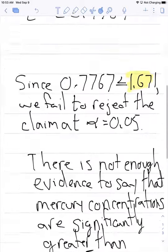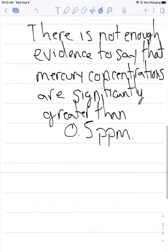But the key here is that we're looking at the significant difference. And so we don't have enough evidence to say that mercury concentrations are significantly greater than 0.5 parts per million, even though our sample mean was slightly greater than that. And this is really the value of statistical tests and the value of hypothesis testing.